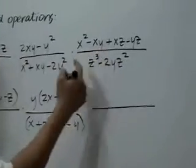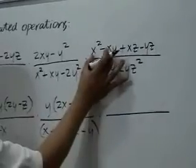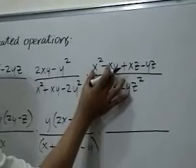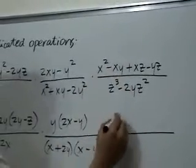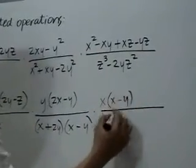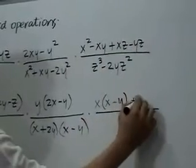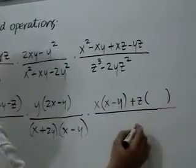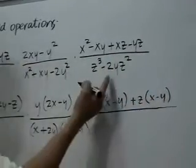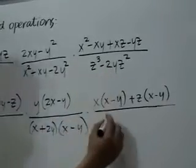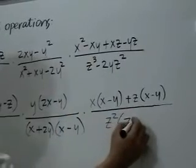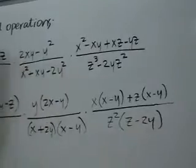For this numerator, again we do some grouping, grouping the first two terms and then the last two terms. A common factor here is x, so if we factor out x from the first term we will be left with x, and from the second, negative y. z is a common factor in the last two terms, so we have z times quantity x minus y. And we have a common factor here which is z squared, leaving us with z in the first term and then negative 2y in the second.